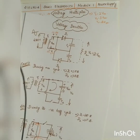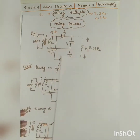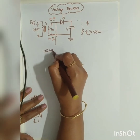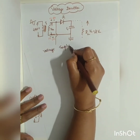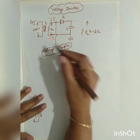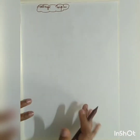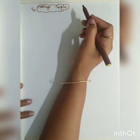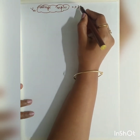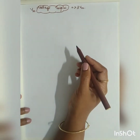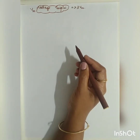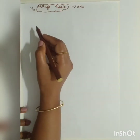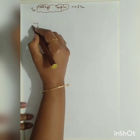Now let us move on to the voltage tripler circuit. For a voltage tripler, if the maximum input voltage is Vm, the output is going to be 3Vm. In addition to the previous doubler circuit, we are going to add one more diode and capacitor pair, giving us three diode-capacitor pairs in total.